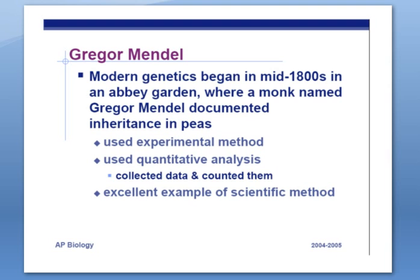Gregor Mendel is considered the father of modern genetics. He was a monk in the mid-1800s who did experiments with pea plants and figured out the rules of genetics. He got lucky — pea plants have fairly simple genetics, and using them he discovered things like dominant and recessive traits. He used the experimental method and quantitative analysis — he actually counted things. Before then, people knew you got traits from your parents but weren't systematic in their approach. Mendel was the first to use a systematic approach to figuring out how genetics works.